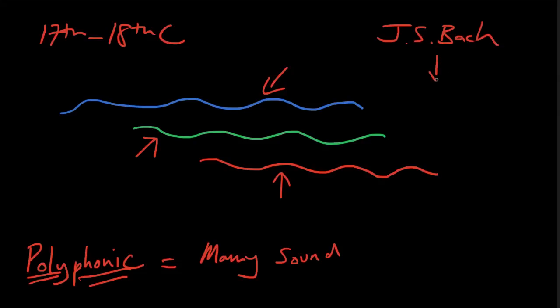Bach was a master of polyphony or counterpoint. And counterpoint just means where you have these independent melodies just like this round that come together to form music but all the different melodic strands are quite separate.